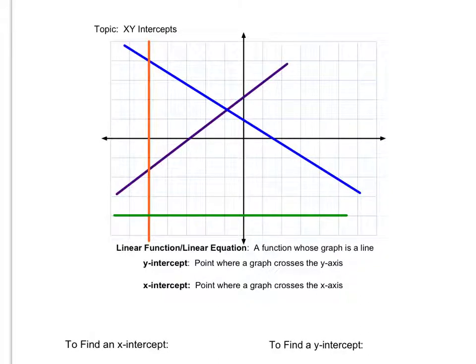Right now we're focusing on linear equations. A linear equation, or linear function — we can use equation and function interchangeably — is just going to be a function that, once you graph it, gives us a straight line. The reason we get a straight line is because we're going to have a constant slope, which we'll talk about more in another video.